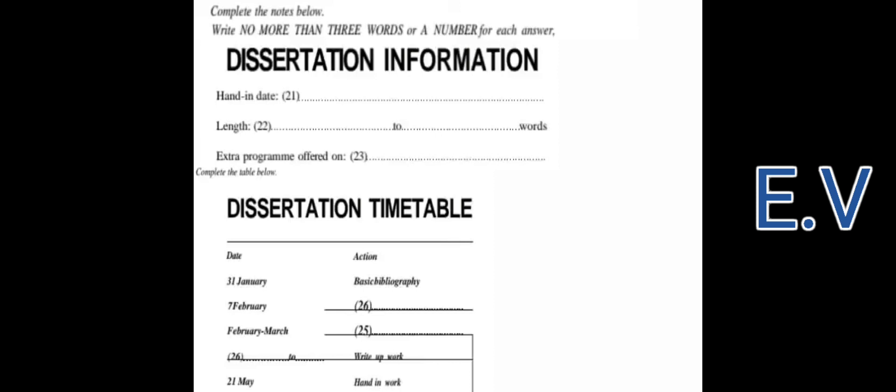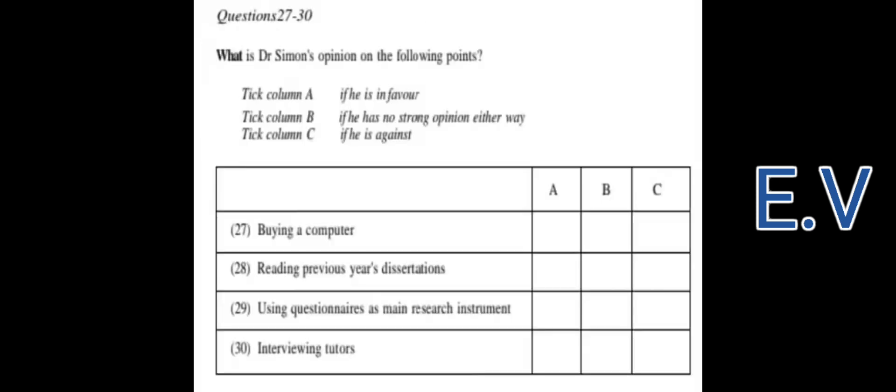Now you have some time to look at questions 27 to 30. Now listen to the rest of the discussion and answer questions 27 to 30. Well, sir, just some advice, really. It's about computers. Would you advise us to buy one? What can I say, Andy? I know it's a massive expense, but I really feel it would be of great benefit. You can always look in the Student Union adverts for second-hand ones.